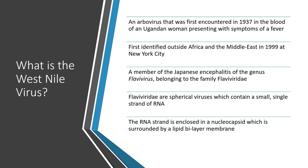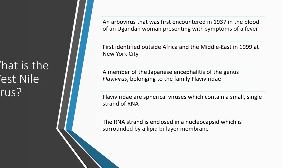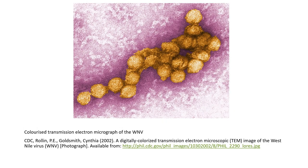West Nile Virus is a member of the Japanese encephalitis group of the genus Flavivirus, belonging to the family Flaviviridae. Flaviviridae are spherical viruses which contain a small single strand of RNA. The RNA strand is enclosed in a nucleocapsid which is surrounded by a lipid bilayer membrane. This is an image of a colourised transmission electron micrograph of the West Nile Virus.